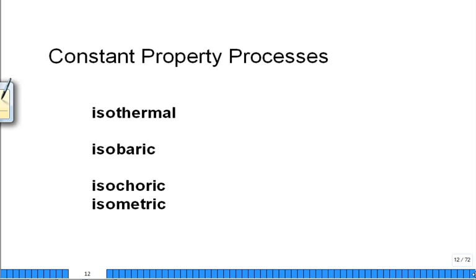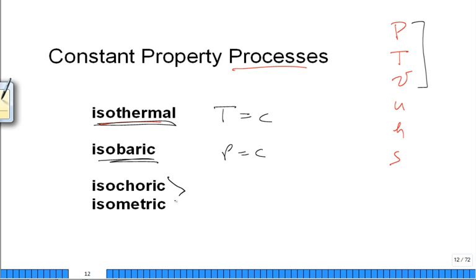We have some names. Just get used to these names. If somebody says the process is isothermal, what's constant? Make a list of all your properties: pressure, temperature, volume, specific volume. We're later going to get other properties like enthalpy and internal energy and entropy. So isothermal would be temperature's constant. Isobaric, pressure's constant. And either the name isochoric or isometric would mean volume is constant. These words are used to describe constant property processes.